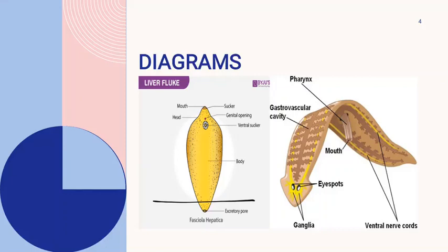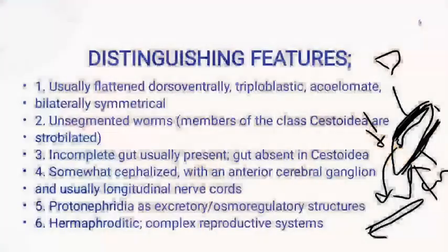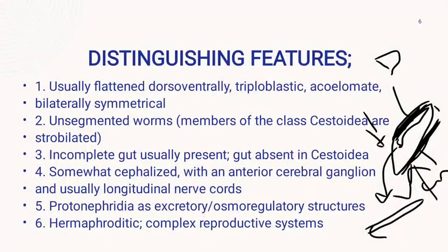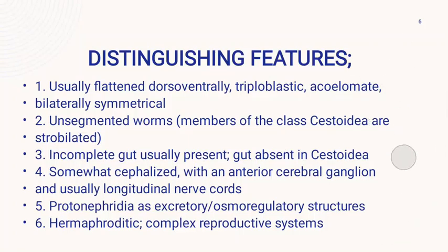Moving on to the next distinguishing feature, there is some cephalization in these animals. Platyhelminthes are the first animals to have a brain. They do not have an actual brain, but they have a pair of basal ganglia present, followed by longitudinal nerve cords. These longitudinal nerve cords are joined by commissures.